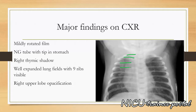The lungs are well expanded with 9 posterior ribs visible. There is some opacification in the right upper lobe suggestive more of aspiration than of atelectasis, as there is no apparent loss of lung volume.